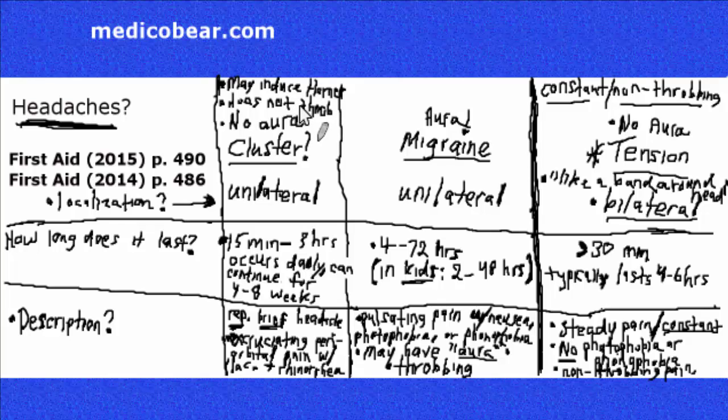And it doesn't necessarily have to be all three symptoms. It's important to note that it can be a partial Horner syndrome. So you might just see ptosis and miosis, for example. So you don't necessarily have to see all three signs of Horners with the cluster headache. The cluster headaches tend to be more common in males, especially smokers. It can induce a partial Horner syndrome or a complete Horner syndrome, repetitive, brief headaches, described as excruciating periorbital pain with lacrimation that's tearing from the eye, and rhinorrhea, which is like a stuffy nose.